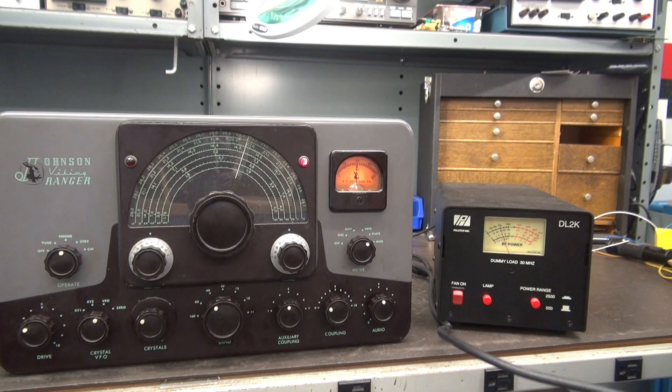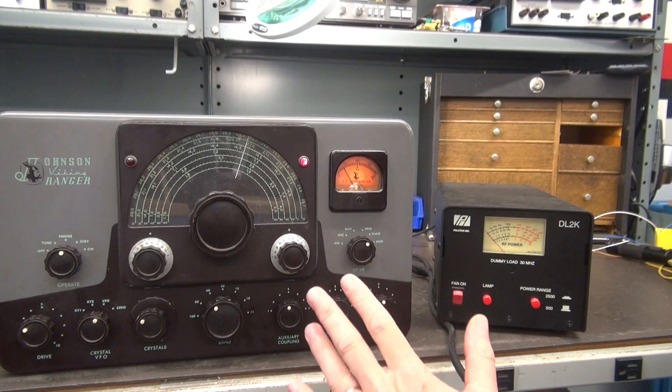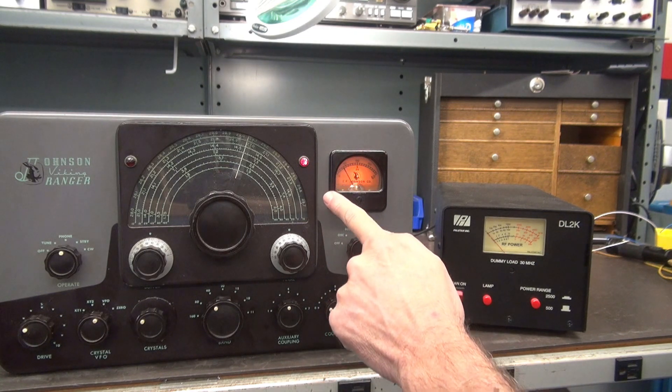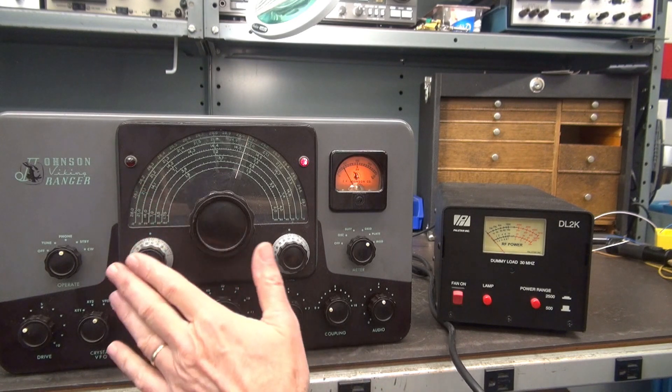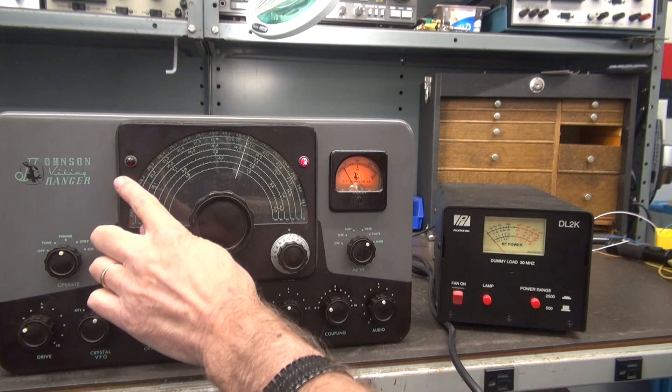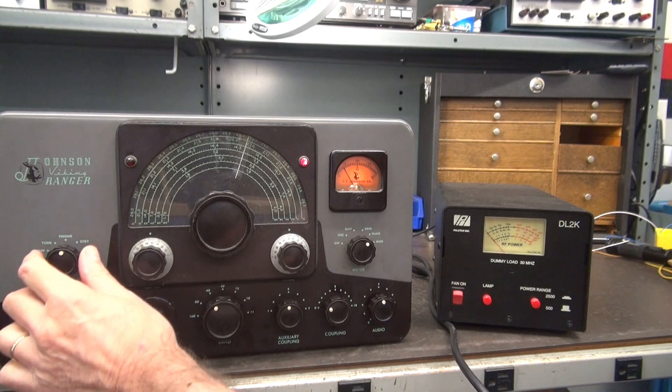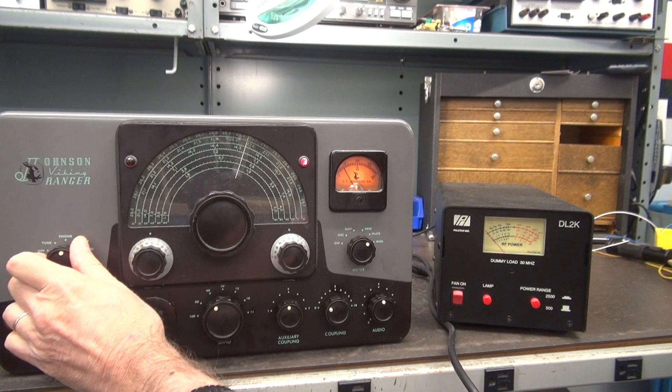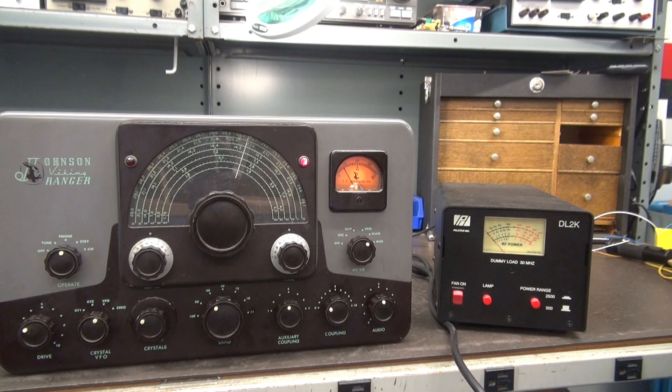So what I'm going to do next is I'm going to add the auxiliary contact for the transmit light. So currently, this Ranger does not have a lamp over here. Many of them didn't. We're going to move a power on indicator over here, and this will be our transmit indicator. So then, when I key, you're going to see this action on the lamp. So let's get it hooked up.